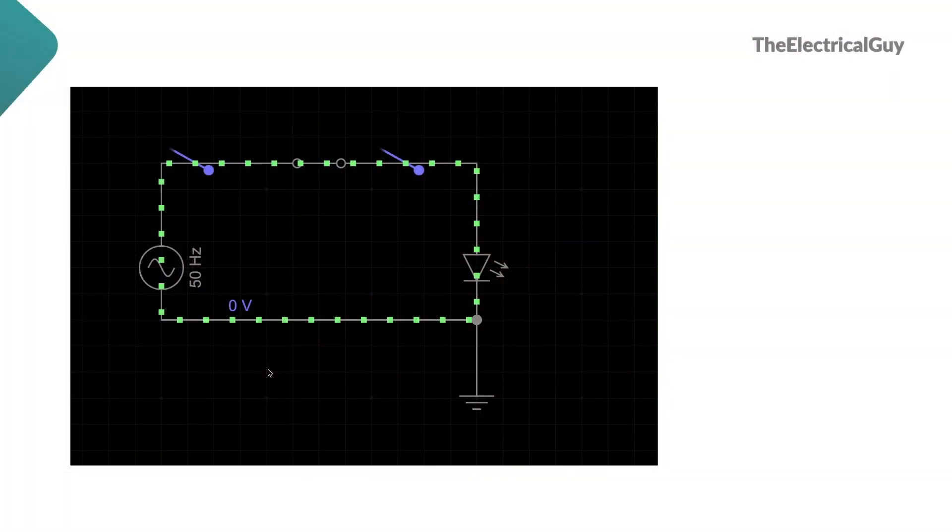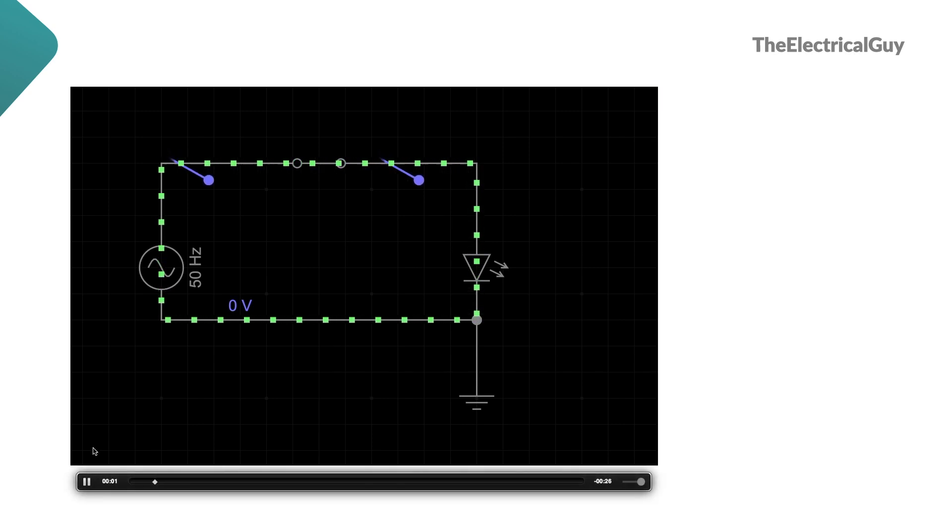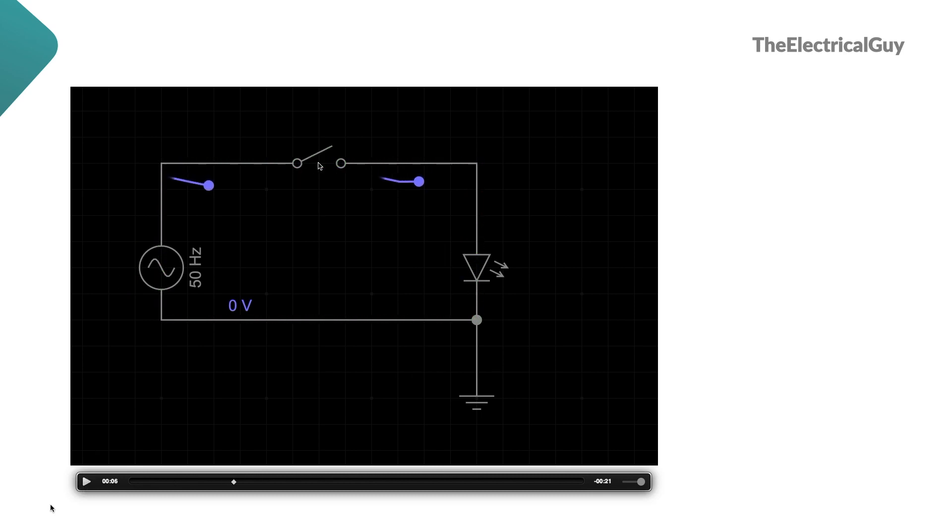As we know, an electric circuit is a closed path offered for electrons to flow. An example of circuit you can see on your screen. Now let's say there is some interruption in the closed path and because of that, the flow of electron is disturbed or stopped.